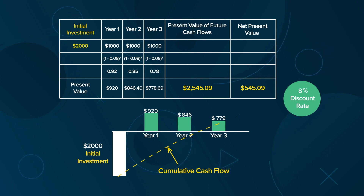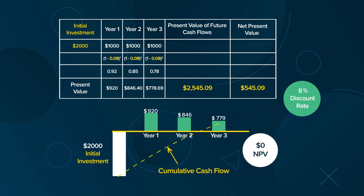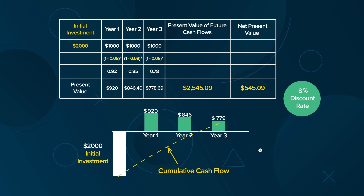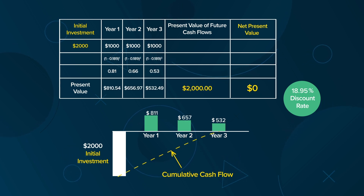The Internal Rate of Return is the discount rate that would bring this project to break even, or $0 net present value. In this case, an Internal Rate of Return of 18.95% brings the Net Present Value of future cash flows to zero.